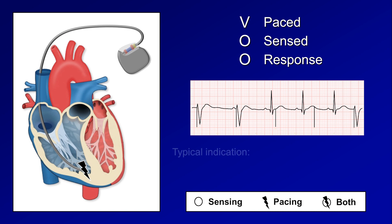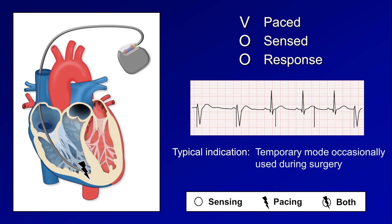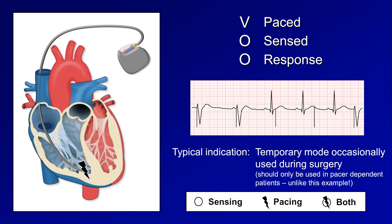The only typical indication for VOO mode is as a temporary mode occasionally used in surgery when electrical noise from an electrocautery device might be misinterpreted by the pacemaker. To eliminate the risk of a pacing spike occurring on the T wave, this mode should only be used in pacer-dependent patients, unlike this example, which is something you would never want to see in real life.